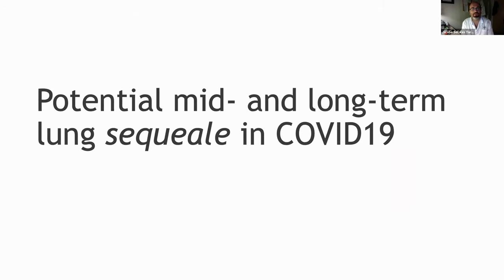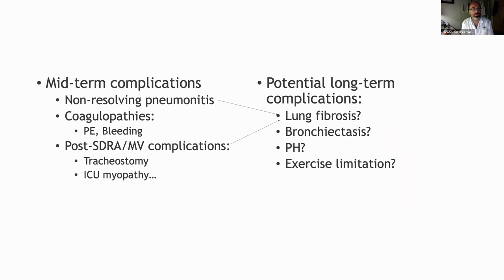So what do we know about mid and long-term lung sequelae? We don't have too much information yet, but we have some. When we talk about possibilities of mid-term complications, we have what we call non-resolving pneumonitis — a concept we have defined for what we are seeing in our patients. There is a phenotype of patients that presents this complication. Alterations of coagulation, and especially pulmonary embolism, are also frequent.